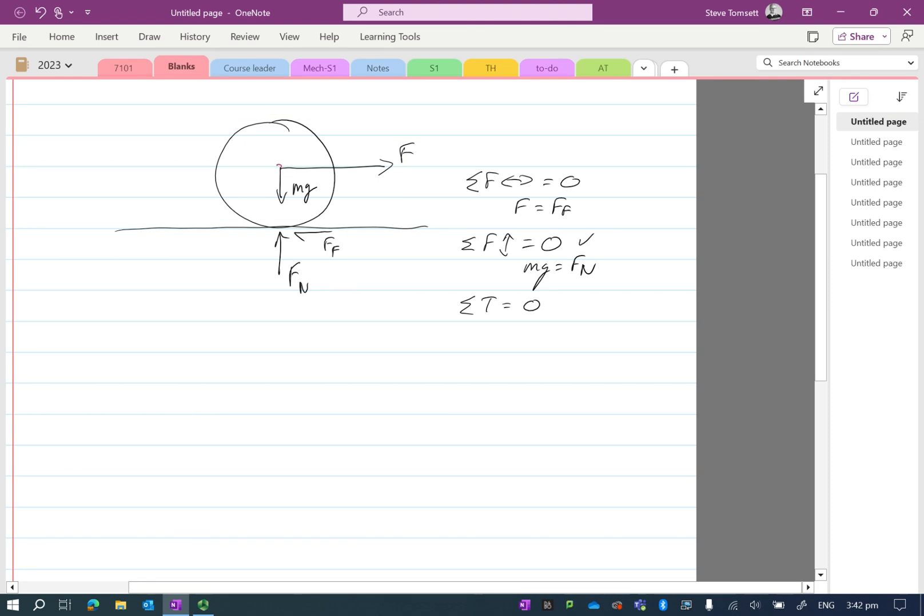So if I do torques about the center point, what we will find is that we'll have our friction force acting at the radius of the wheel, producing a torque around clockwise. If I have an out-of-balance torque, then that is going to result in an acceleration of my object.